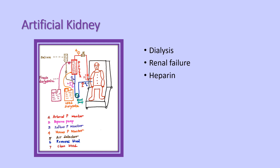In the artificial kidney, the blood is let out and passed through the chemo filter. Heparin is used as the anticoagulant. Heparin is induced through the saline into the artificial kidney. The blood is then passed through the hemodialyzer.